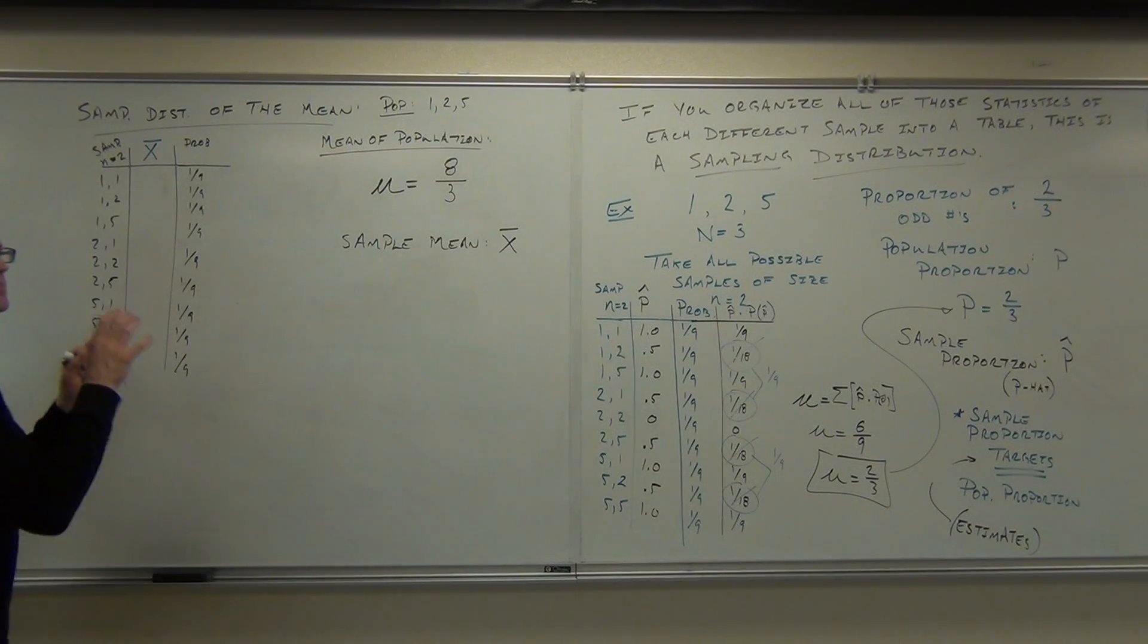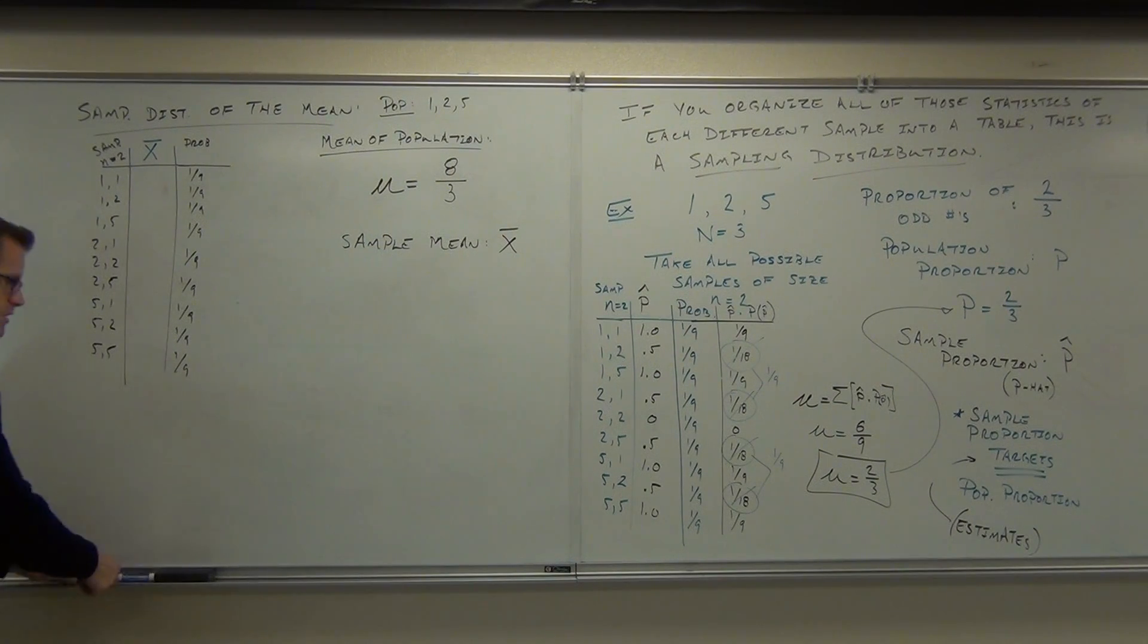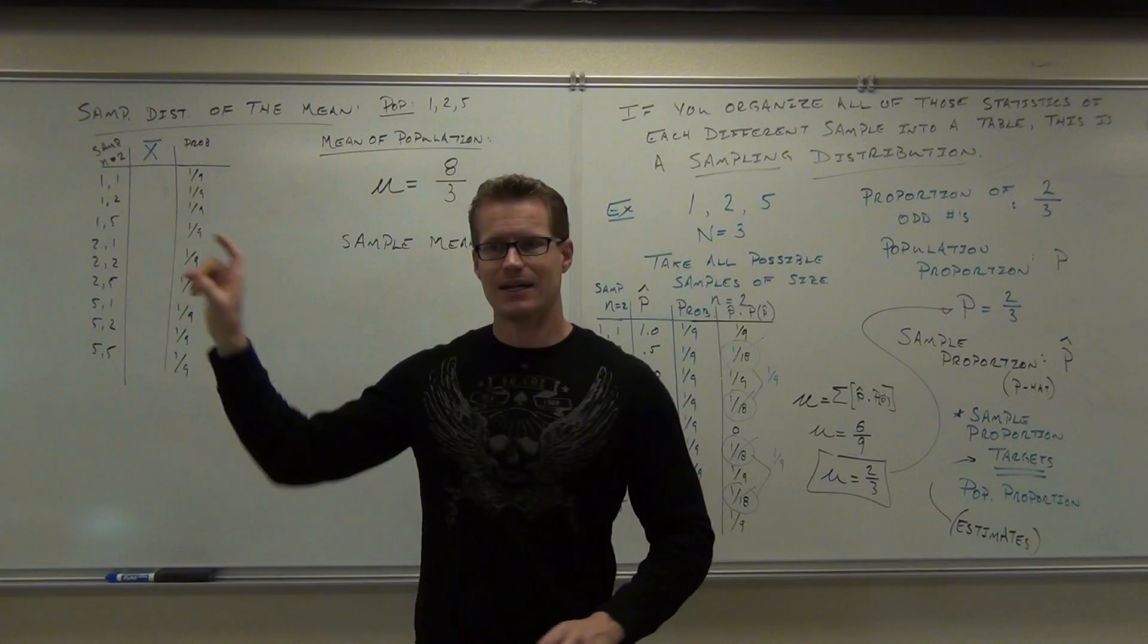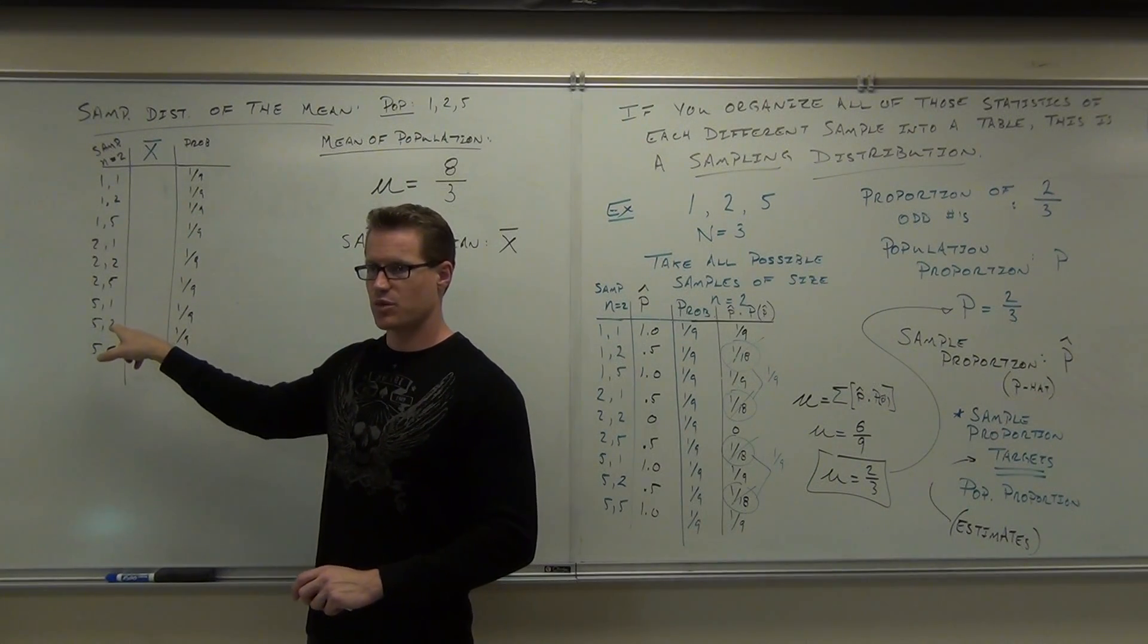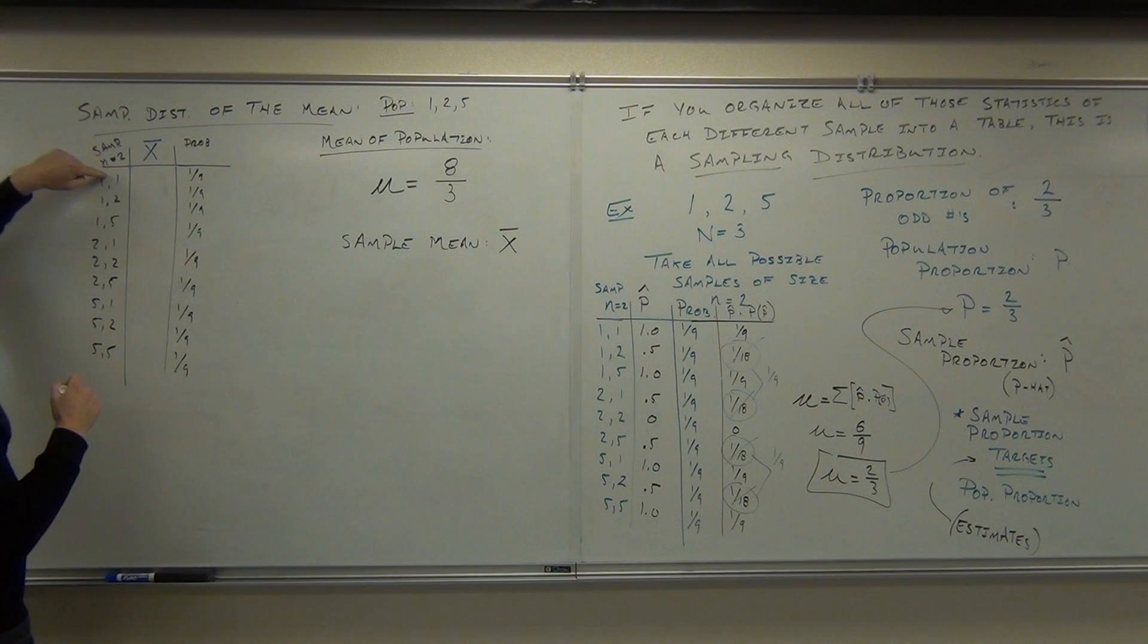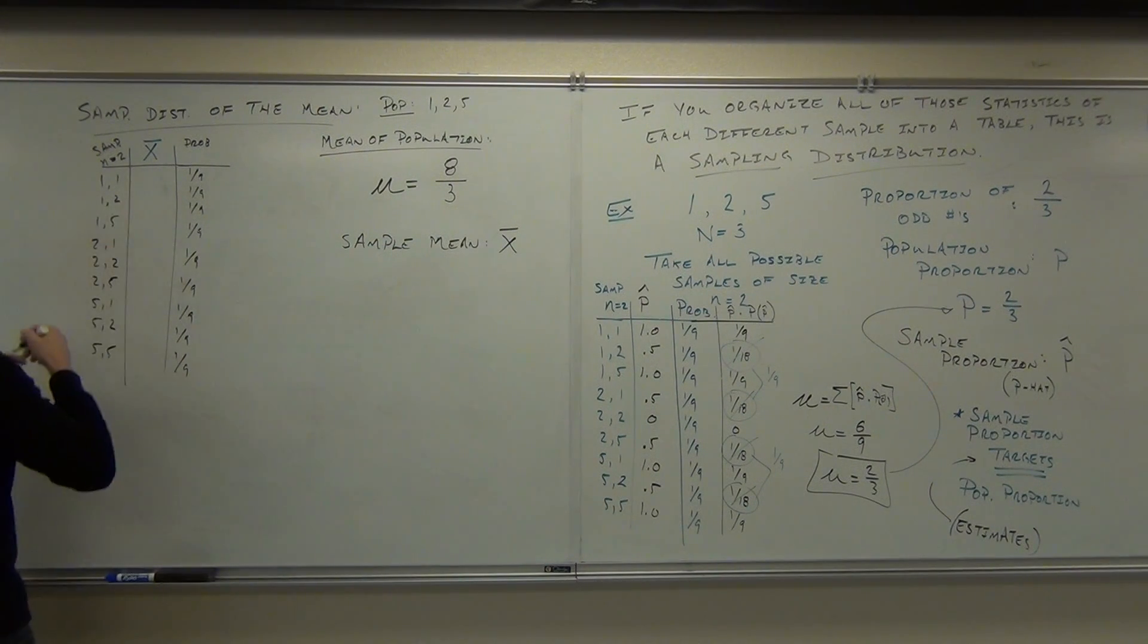Let's find out the mean for each of these samples. The mean is you just add them and divide by the number you added. How many are we adding in every case? Two. So we're going to be divided by two. What's the mean of one and one? You add them up, you divide by two, you get one.